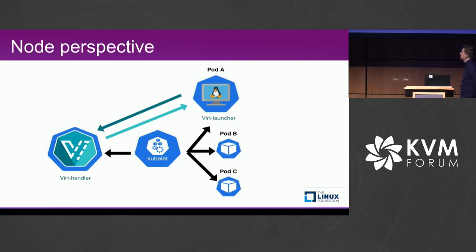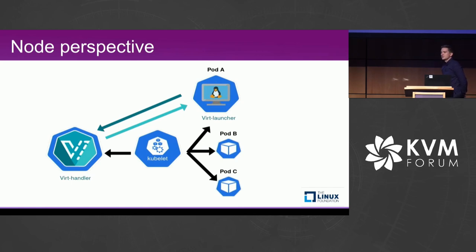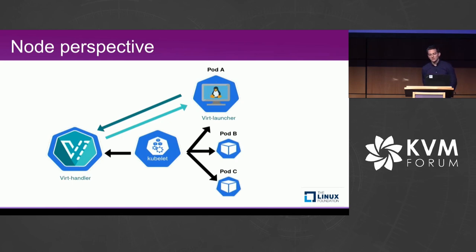There are two important components on the node. The first is a pod called virt-launcher, which runs components like libvirt and QEMU — this runs on behalf of the user, so we don't fully trust it. The second is our privileged node agent called virt-handler, which can see other processes on the node. This privileged component performs setup for virtual machines so that privileges can be dropped on the virt-launcher side.